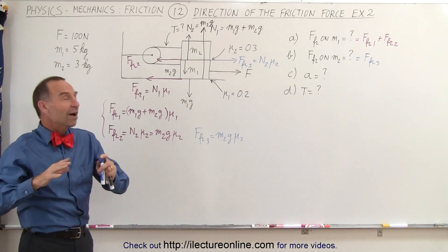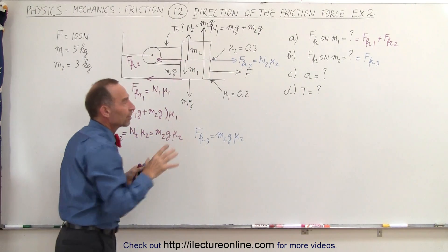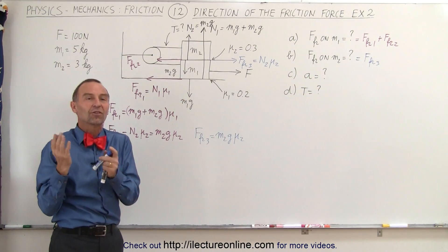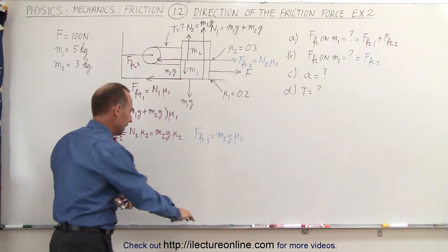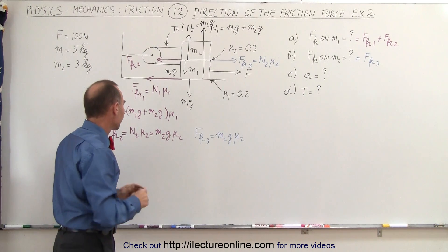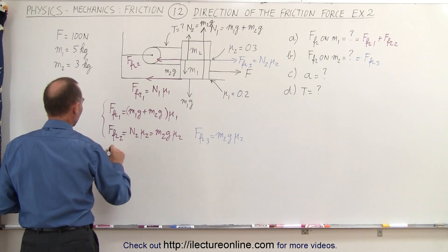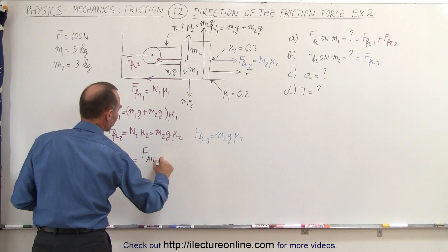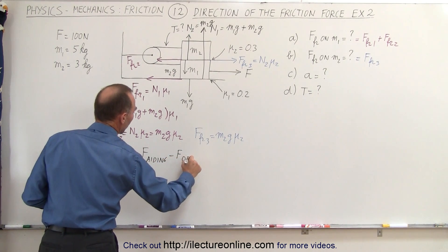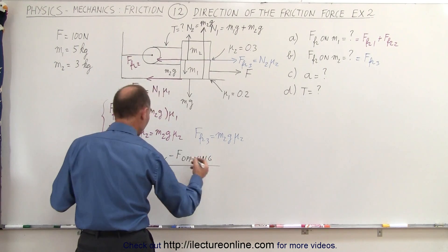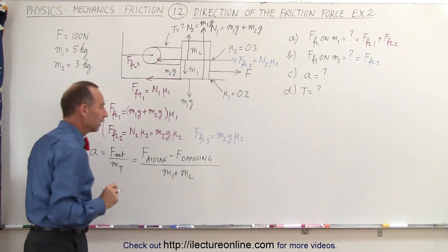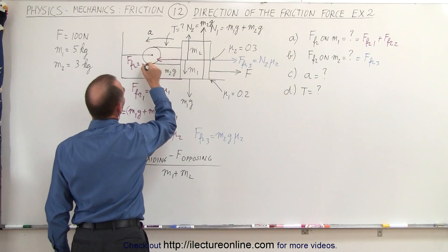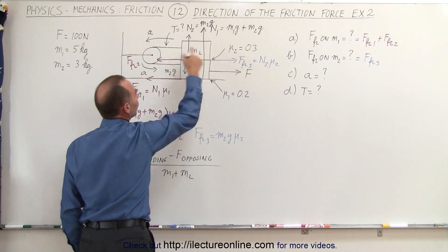Now that we've found all the friction forces, we can calculate the acceleration of the whole system. Be careful: we have to think about whether each friction force is aiding or opposing the acceleration. The acceleration equals the net force divided by the total mass, where net force equals all forces aiding acceleration minus all forces opposing acceleration, divided by m1 plus m2.